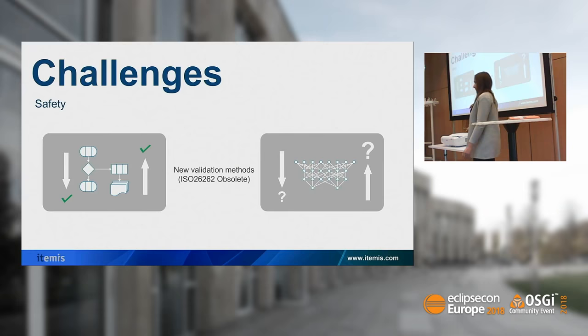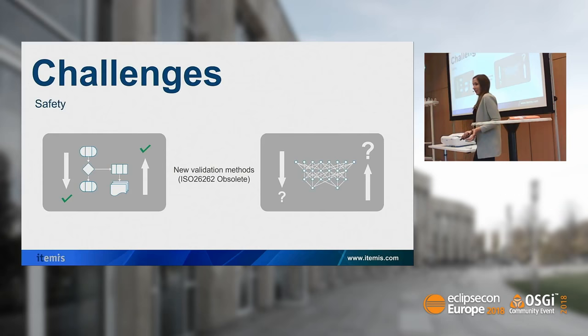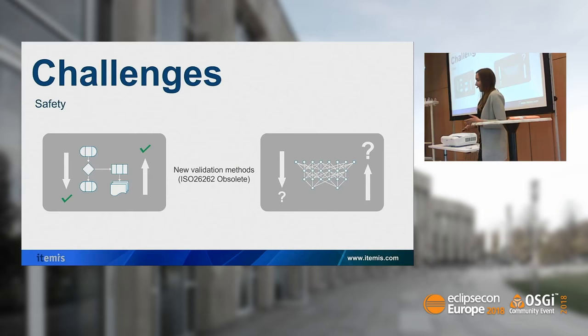Another challenge is safety. Some of you might know ISO 26262, which is the standard for functional safety in the automotive domain, but it doesn't handle artificial intelligence at all at the moment. We need to find new validation methods, because we must ensure that the model doesn't predict anything wrong, and we also must understand why a neural network takes its decisions and why it might take them wrong, ensuring it never goes wrong when embedded in the vehicle.